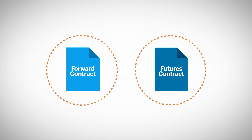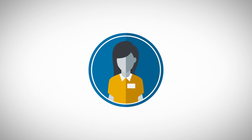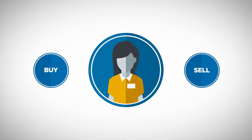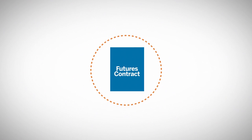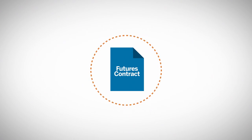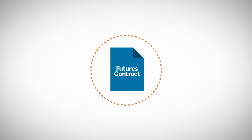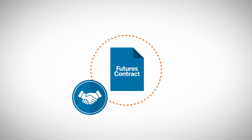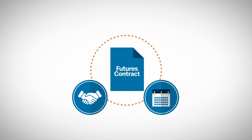Forward contracts and futures contracts are financial instruments that allow market participants to offset or assume the risk of a price change of an asset over time. However, a futures contract is distinct from a forward contract in two important ways. First, a futures contract is a legally binding agreement to buy or sell a standardized asset on a specific date or during a specific month.